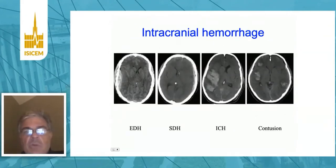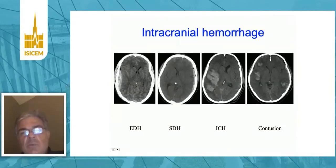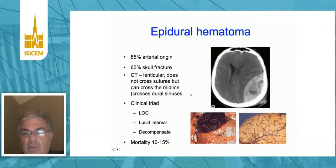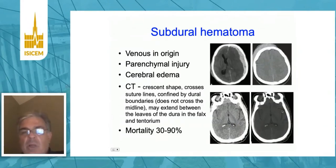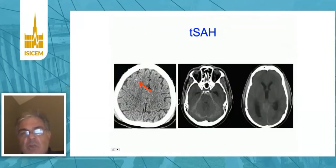Here are the different hemorrhages in trauma: epidural hematoma, subdural hematoma, intracerebral hemorrhage, and contusion. They have distinct features. The epidural hematoma won't cross suture lines; the subdural hematoma will. Here you can see an example of an epidural hematoma — the underlying brain is usually not affected. This differentiates it from a subdural hematoma, which is more likely to be venous rather than arterial in origin. The mass effect occurs not only because of the size of the hemorrhage, but the underlying damage and swelling to the brain. Mortality is much higher in a subdural hematoma.